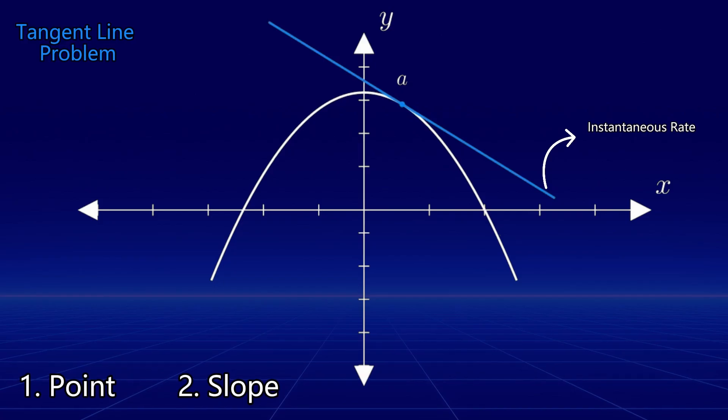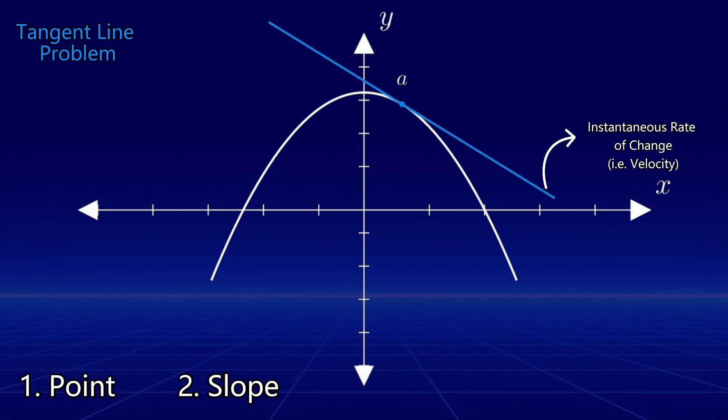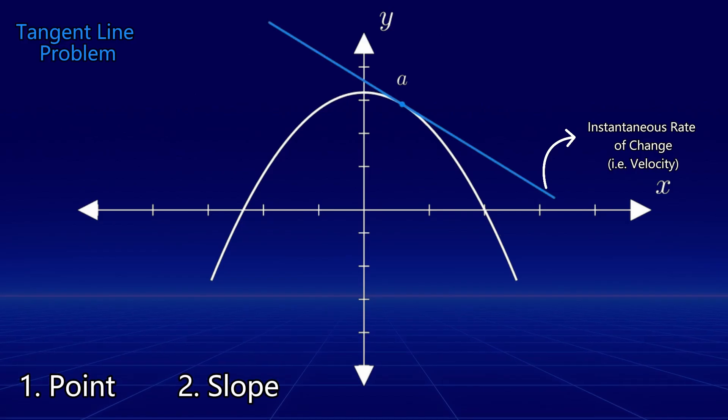The slope of a tangent line can represent the instantaneous rate of change, which could be something like velocity in a physical context. While we may not be able to determine the exact slope initially, we can estimate it using a method involving a secant line.